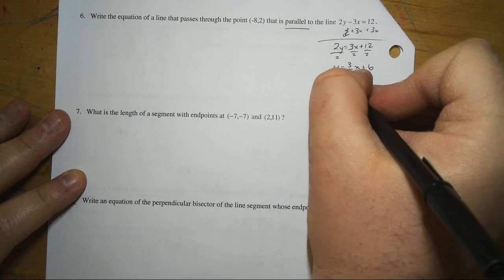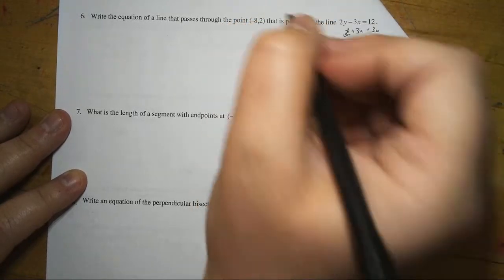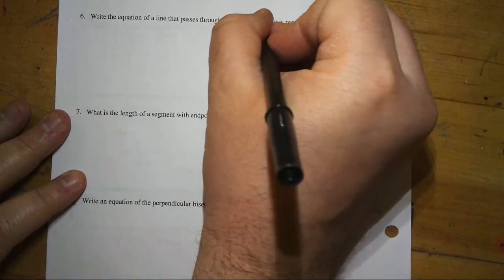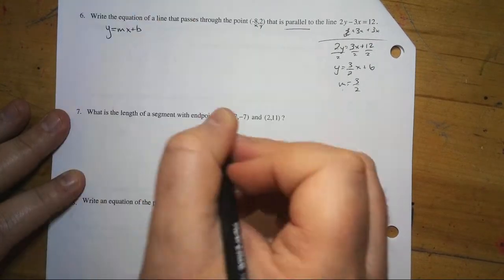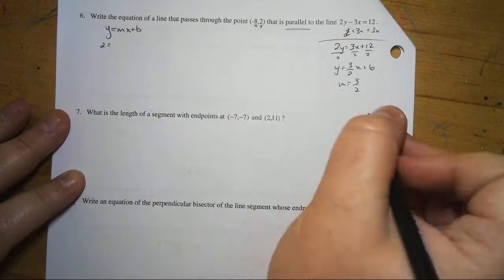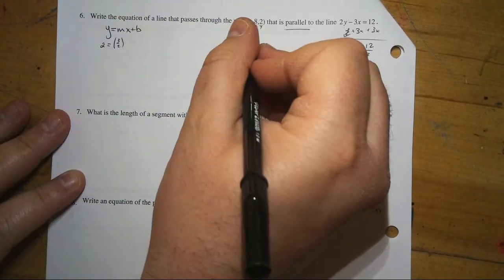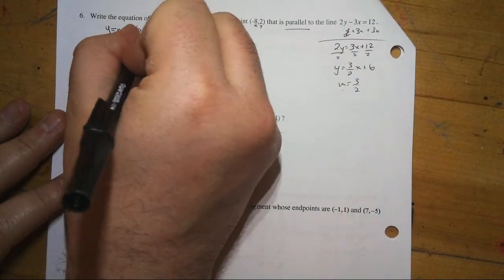So, slope for a line is going to be 3 over 2, and then we're plugging that point in for x and y. So y is mx plus b. The y is 2. The m is 3 over 2. The x is negative 8 plus b.